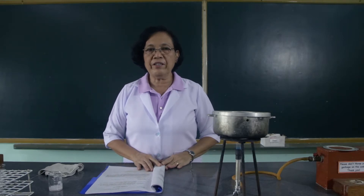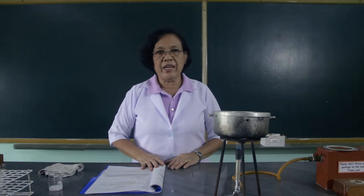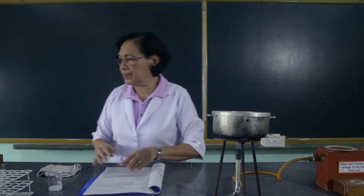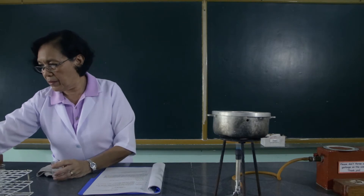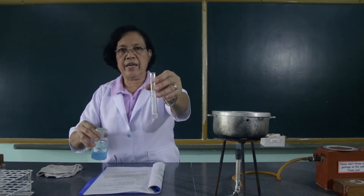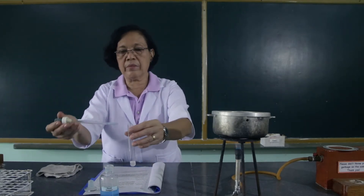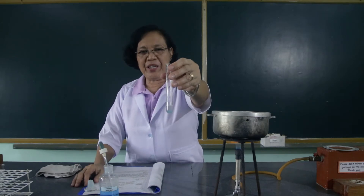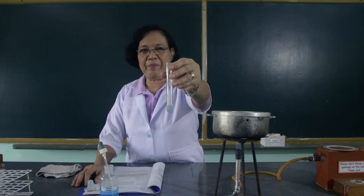For the second procedure, we are going to test the presence of proteins in the saliva. In testing the proteins in the saliva, we are going to add the saliva with the biuret reagent and submit this to biuret test. This is the saliva, and this is the biuret reagent. Observe what happens to the color of the saliva after adding it with the biuret reagent.